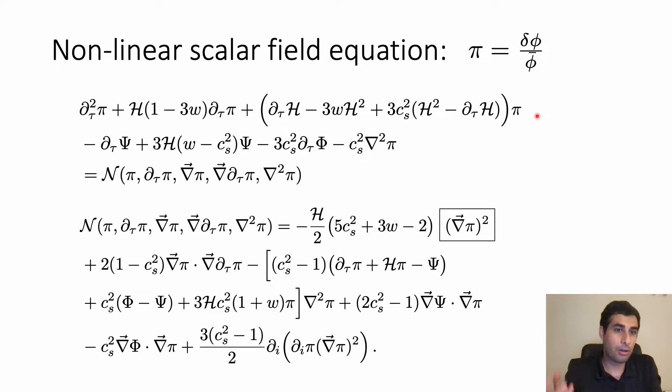Just note that the first two lines, the linear part, is implemented in different codes like CLASS and hi_CLASS and has been shown that k-essence is a viable theory against observations. However here I'm going to show that if we consider non-linearities